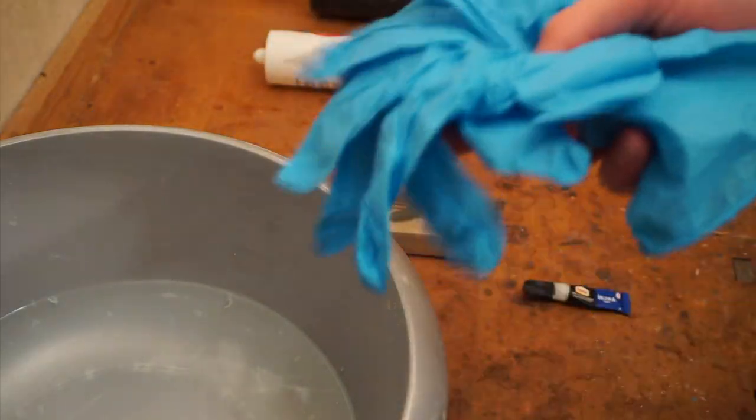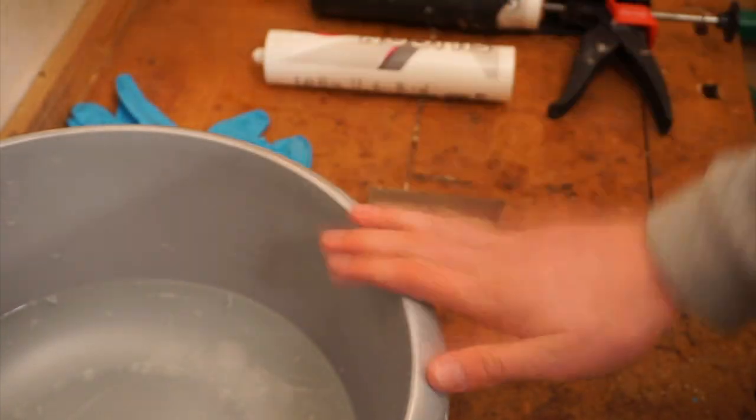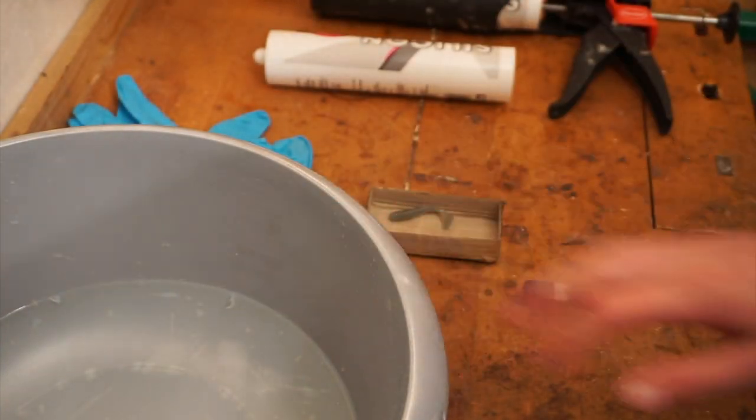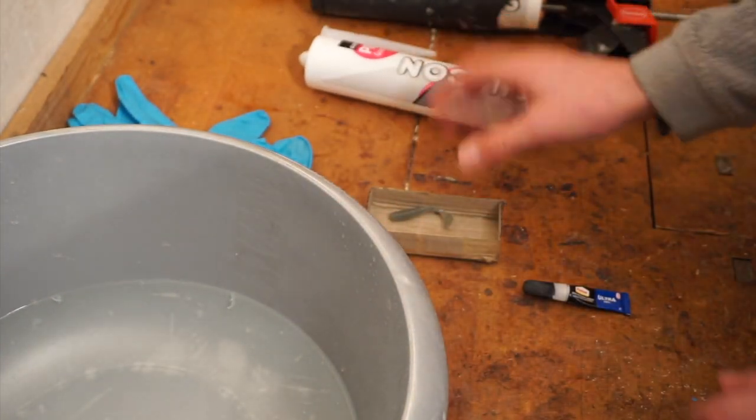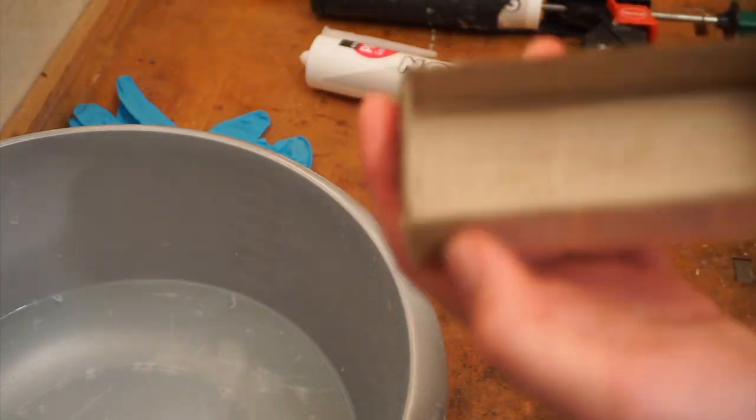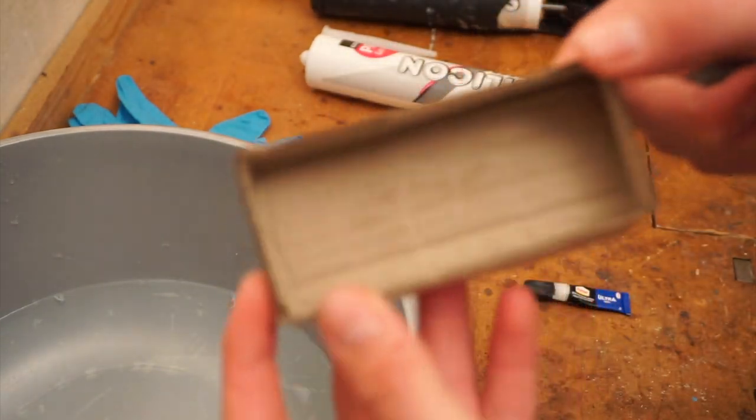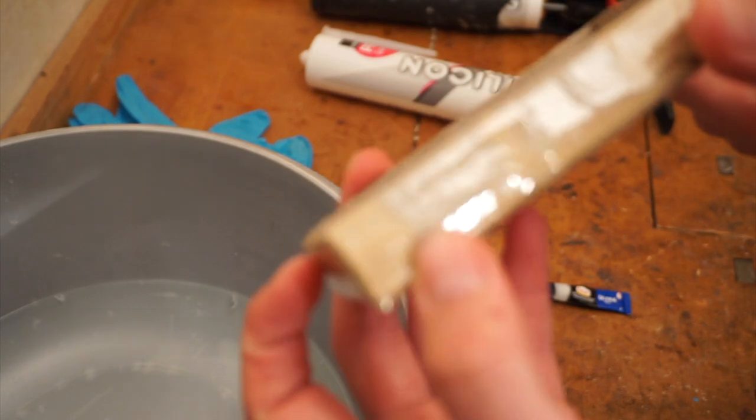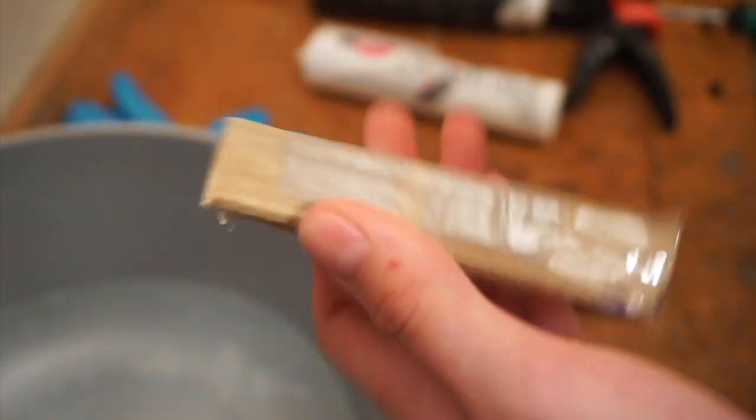First off, I'm going to be working with these gloves because silicone is pretty sticky. You're going to need this bowl of hot water with soap in it, and this little box where the mold is actually going to be formed in. This is just pretty easy, it's just cardboard with tape around it.